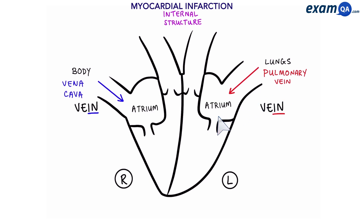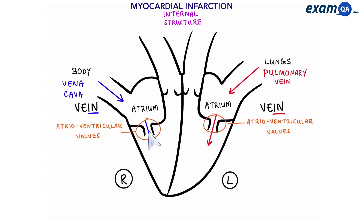Once blood enters the heart, the first chamber that it goes into is called the atrium, or atria if you're referring to both. On its way to the next chamber, the blood passes through some valves called atrioventricular valves. The one on the left side of the heart is called the bicuspid, and the one on the right side of the heart is called the tricuspid.